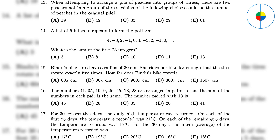Question 15: The radius is 30. The circumference of the tire is 2 times 30 times pi, which is 60 pi. Since it rotates 5 times, 60 pi times 5 is 300 pi.